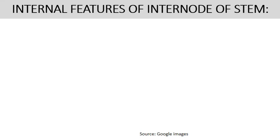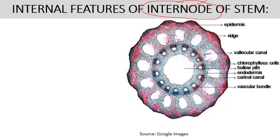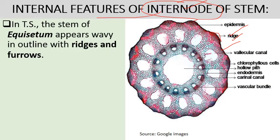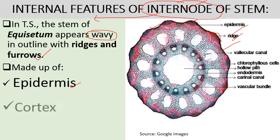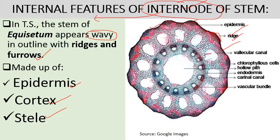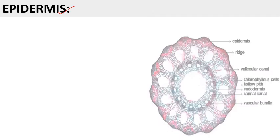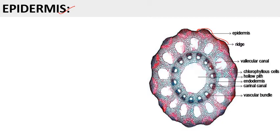Regarding the internal structure: we will first discuss the internal features of the internode of the stem. It is not uniform and is differentiated into ridges and furrows. It is further differentiated into outer epidermis, inner cortex, and central stelar system. In transverse section, the stem — specifically the internodal portion — appears wavy in outline with ridges and furrows, formed by the outer epidermis, then a broad cortex, and finally the central stelar system.